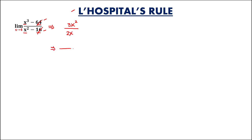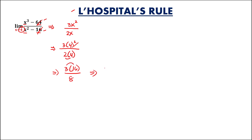We can now use direct substitution. As x approaches positive 4, this becomes 3 times 4 to the power 2, over 2 times 4. This is equal to 3 times 16, which is 48, over 2 times 4, which is 8. So 48 divided by 8 — therefore, the limit is equal to positive 6.